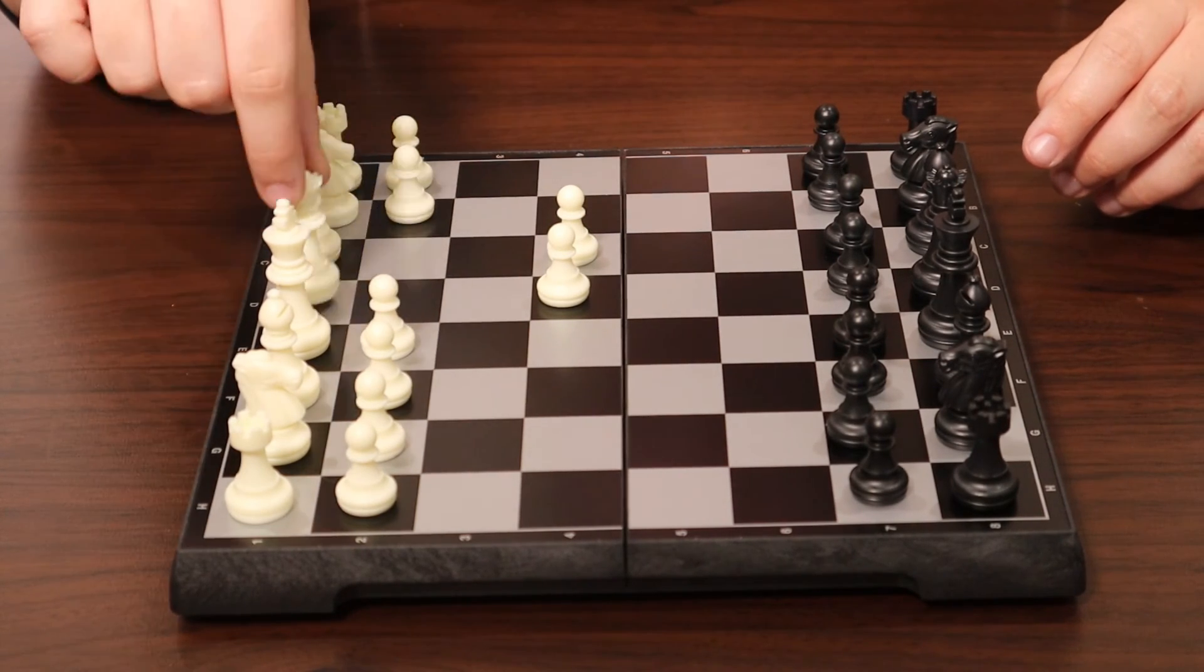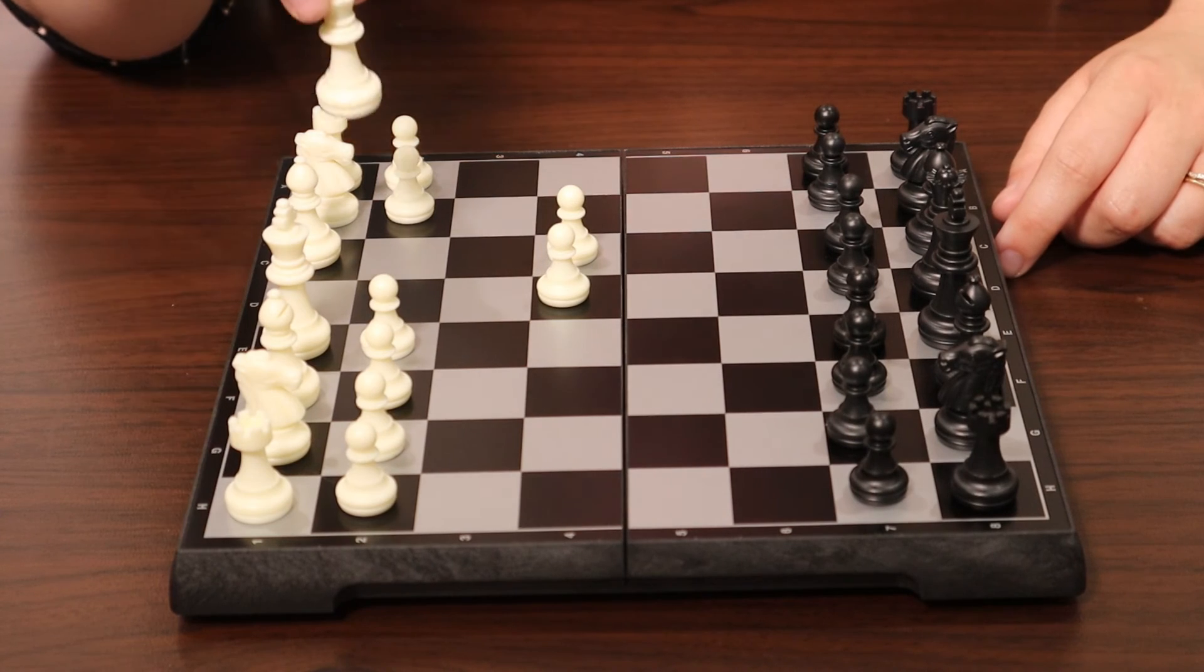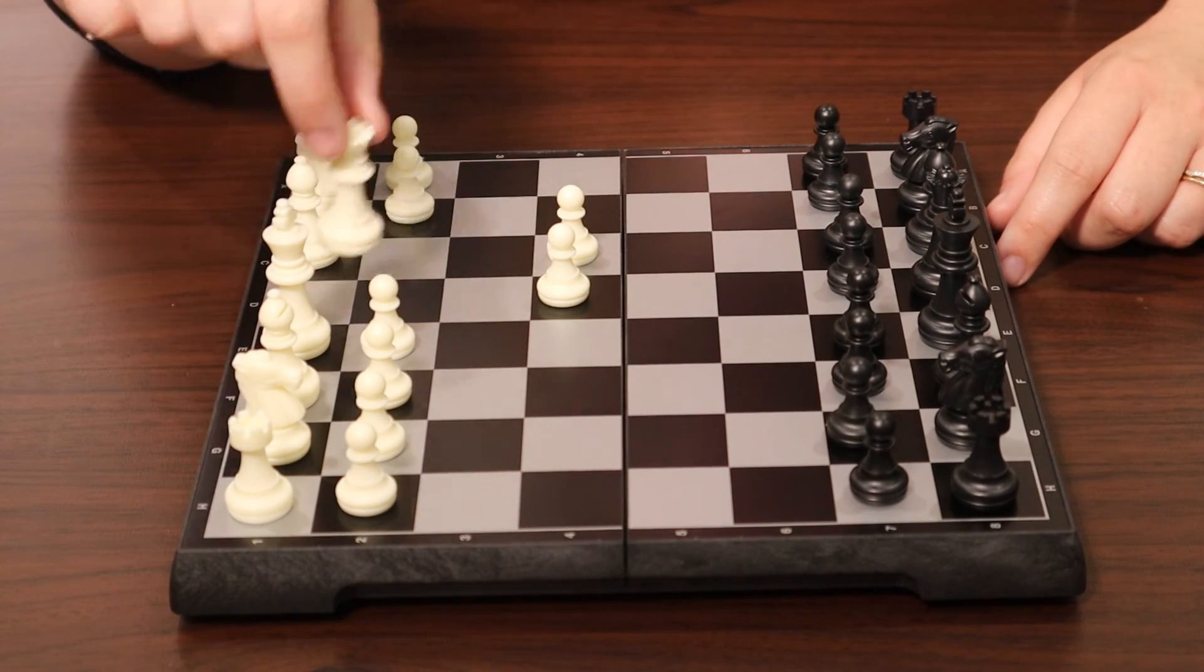The queen can go any direction she wants as many spaces as she wants. So the queen can go anywhere.